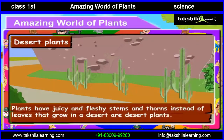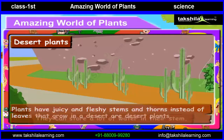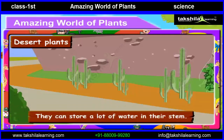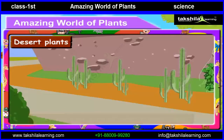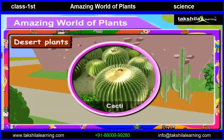Now let us understand about desert plants. Plants that have juicy and fleshy stems and thorns instead of leaves, that grow in a desert, are desert plants. They can store a lot of water in their stem. An example of a desert plant is cacti.